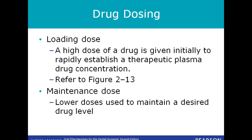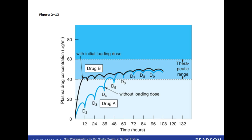A loading dose is a high dose of a drug which is given initially to rapidly establish a therapeutic plasma drug concentration. Refer to Figure 2-13 for more information. A maintenance dose is a lower dose that is used to maintain a desired drug level for the desired amount of time. Figure 2-13 shows how repeated doses of a drug can accumulate in the blood.